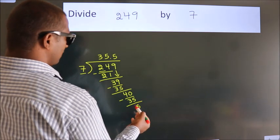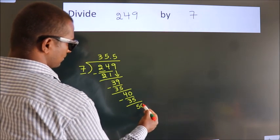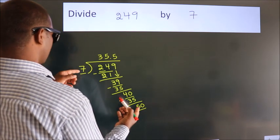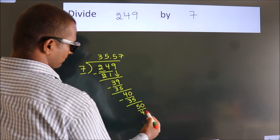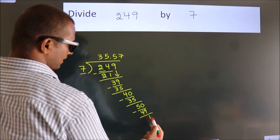After this, we already have the decimal, so directly take 0. So 50. A number close to 50 in the 7 table is 7 sevens, 49. Now we subtract. We get 1.